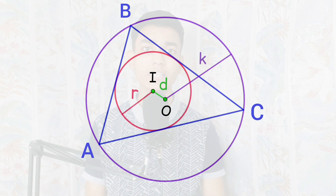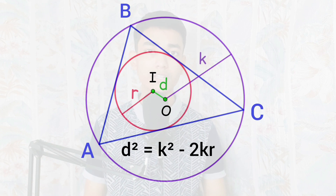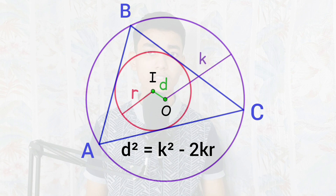Euler gave a nice relation between D, K, and R: D squared will always be equal to K squared minus 2 times K times R.